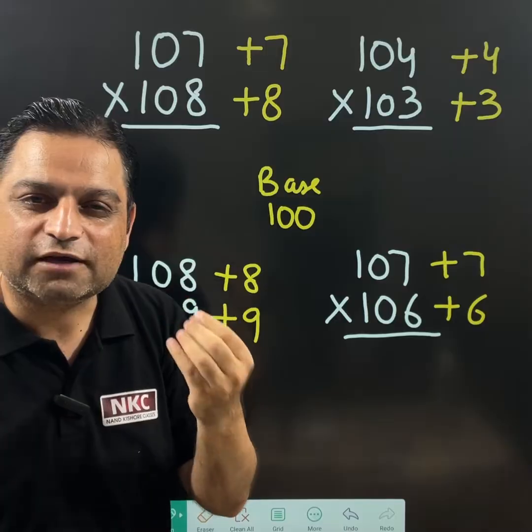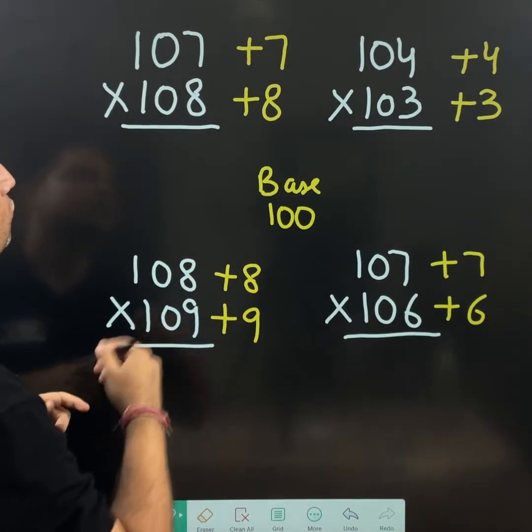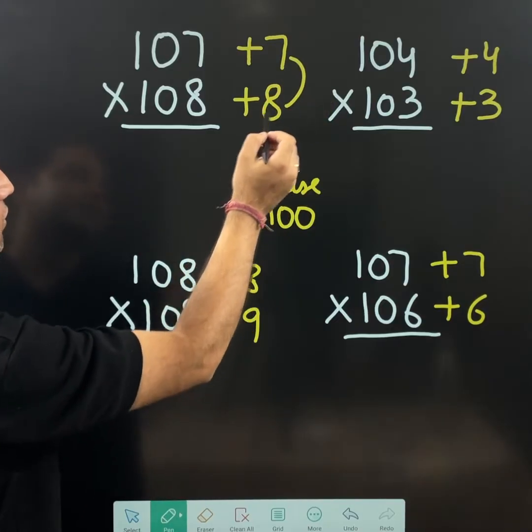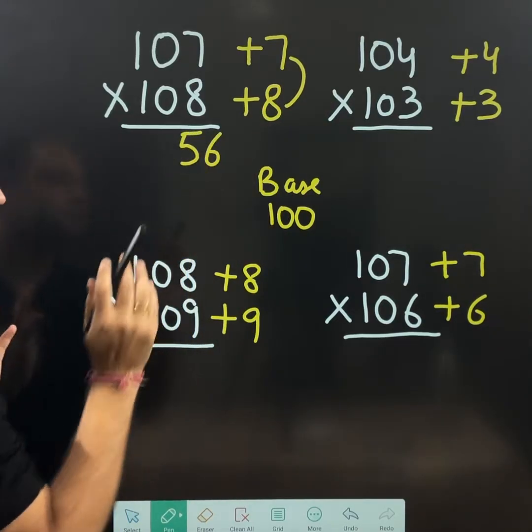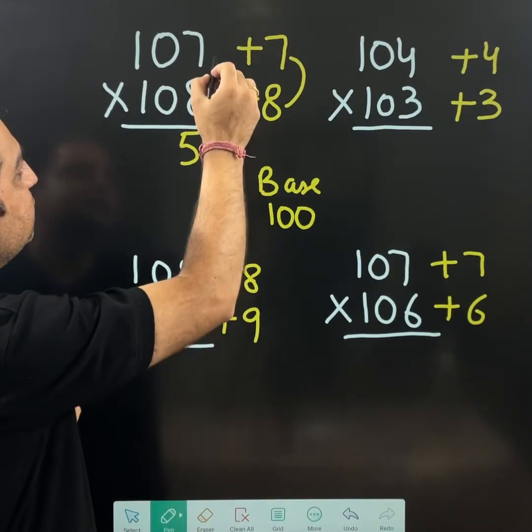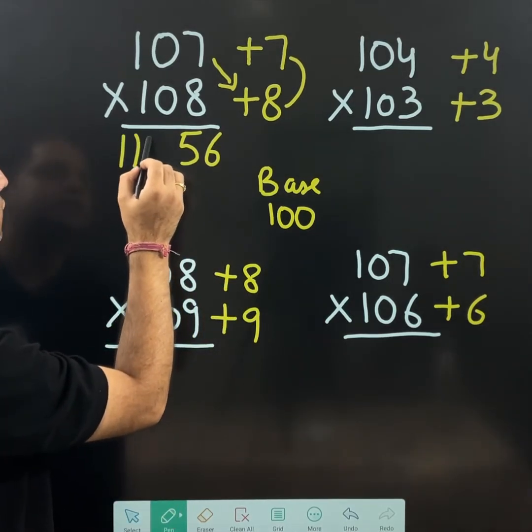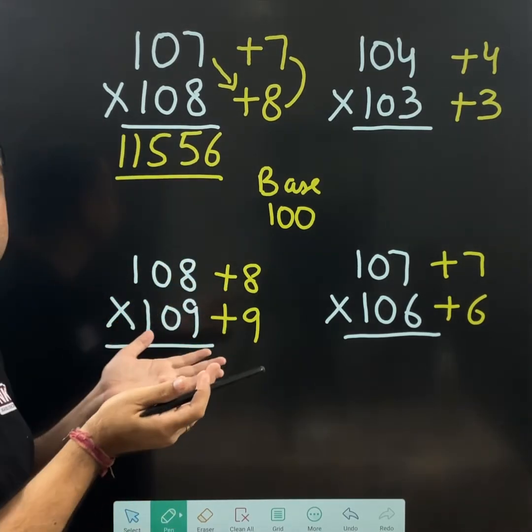Now, with the fractions of seconds, you will take to do the calculation. What we need to do, multiply 7 and 8, I get 56, right? Directly write 56. There is no problem. Just place an arrow. 107 plus 8, it is 115. This is the answer.